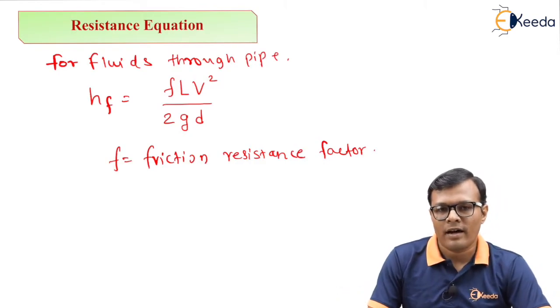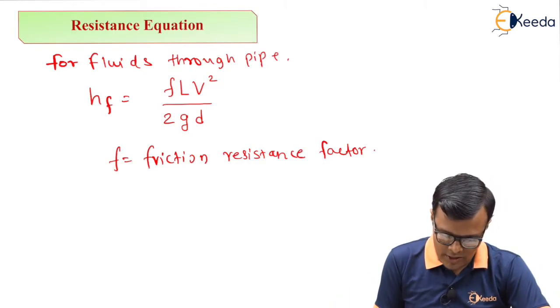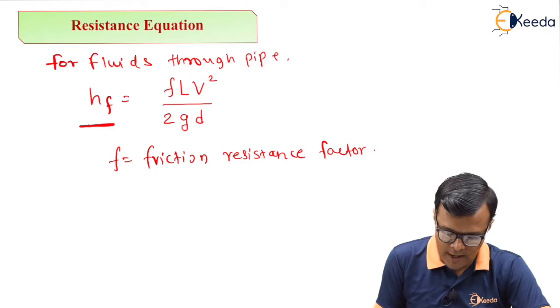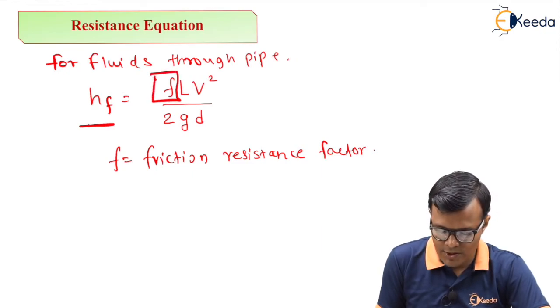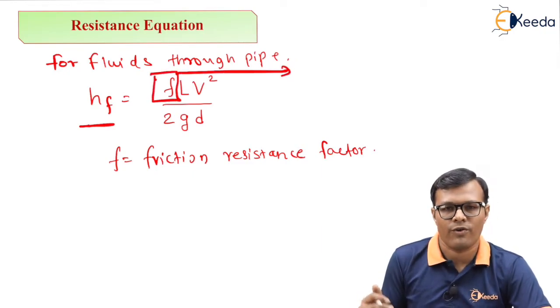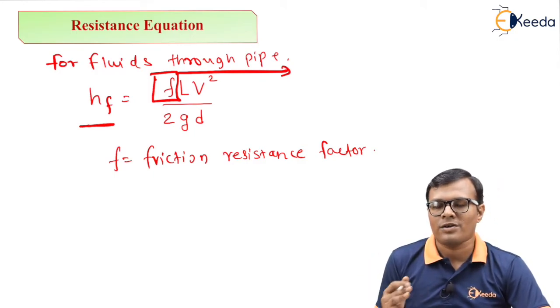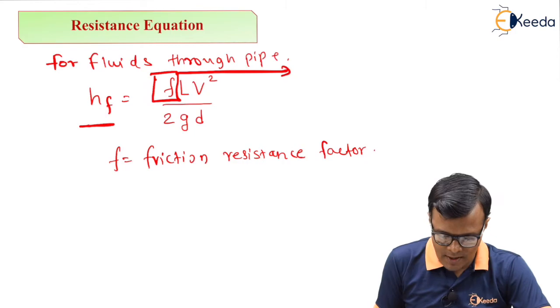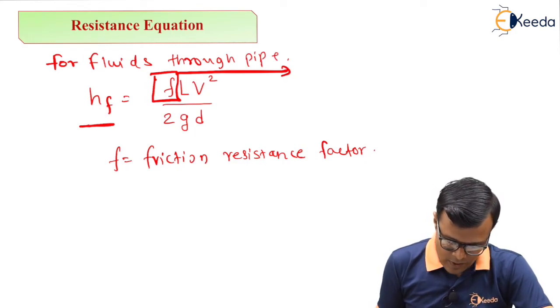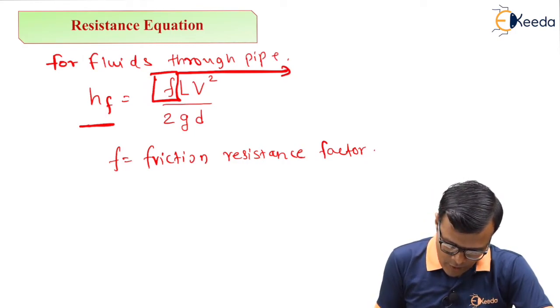So it is clear that total loss in head depends on this highlighting factor, that is friction factor or friction coefficient. So basically it is very important for us to calculate the value of this F.